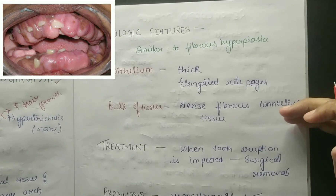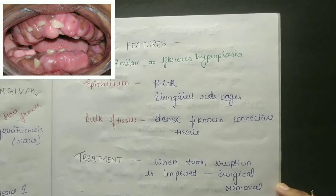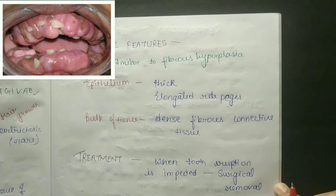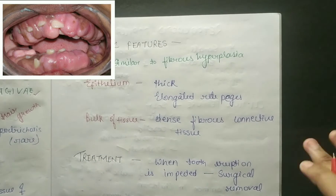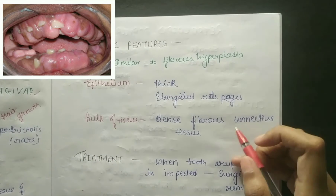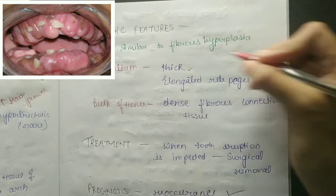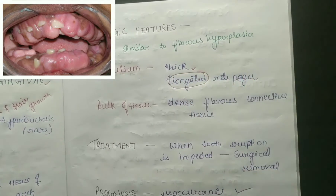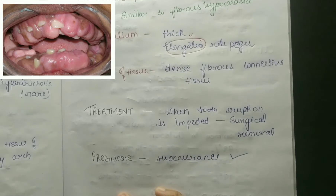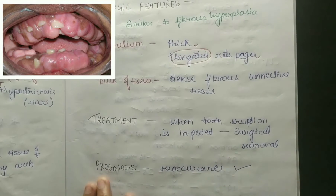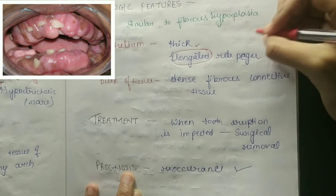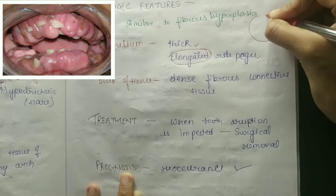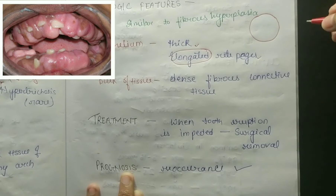Regarding histologic features, fibromatosis gingiva is quite similar to fibrous hyperplasia. In the epithelium you can see elongated rete pegs. When talking about the bulk of tissue, you see dense fibrous connective tissue. If you know H&E diagrams, the elongated rete pegs are visible in the epithelium portion.